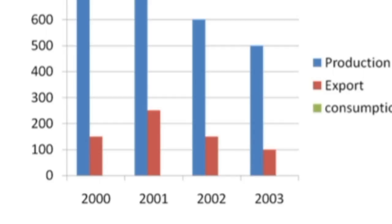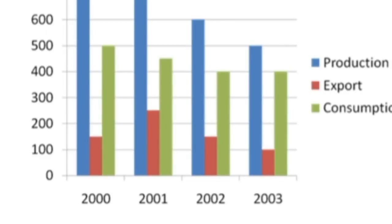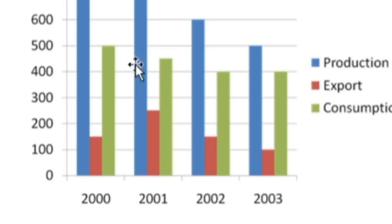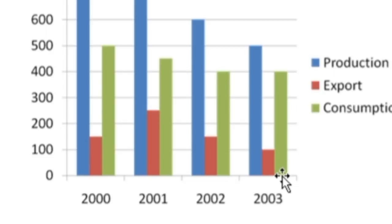Now for consumption: in 2000 it was 500, in 2001 it was 450 — between 400 and 500, in 2002 it was 400, and in 2003 it was also 400.